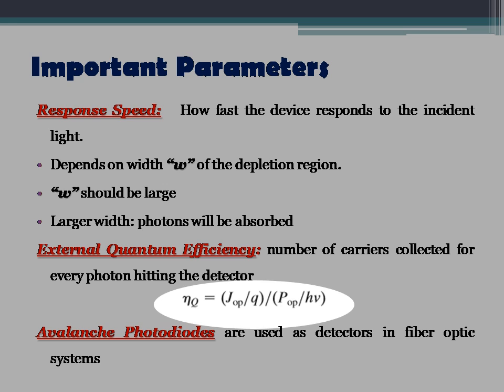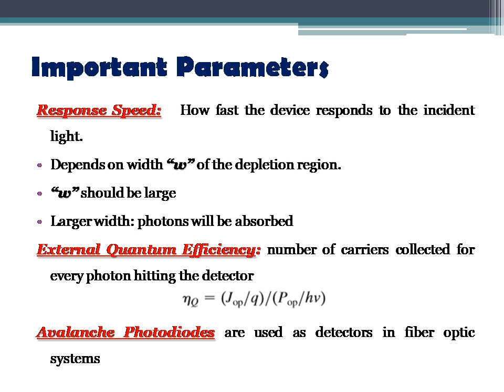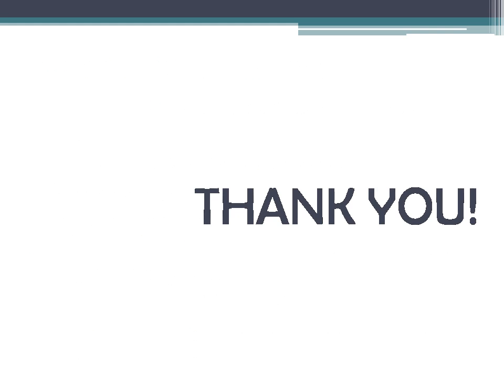If low-level optical signals are to be detected, it is desirable to operate the photodiode in the avalanche region, because each photo-generated carrier results in a significant change in current due to avalanche multiplication, leading to gain and efficiency of more than 100 percent. Avalanche photodiodes, or APDs, are used as detectors in fiber optic systems. That's all for today; we shall meet in the next class.